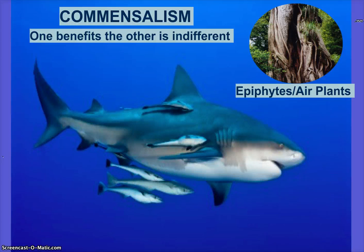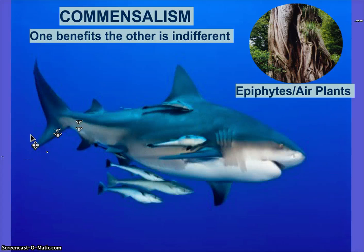Commensalism — one organism benefits, the other is indifferent. Shark and remora: the fish goes with the shark, using it for transportation and to eat food. The fish benefits, but the shark has no idea. Another example is an epiphyte — a plant growing out of a tree. As long as you can say this organism benefits and this one gets nothing, you've described the relationship.